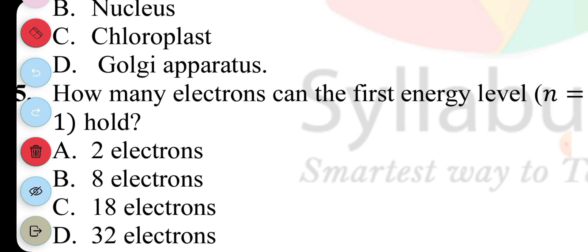Question 5. How many electrons can the first energy level, n equals 1, hold? A is 2 electrons, B is 8 electrons, C is 18 electrons, D is 32 electrons. The answer to question 5 is A, two electrons. There's always 2n² electrons per energy level. Since n equals 1, 2 times 1² gives you 2.